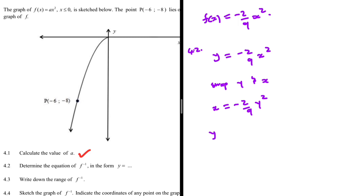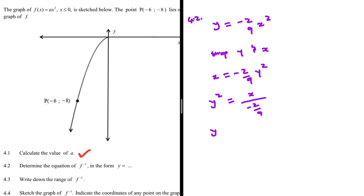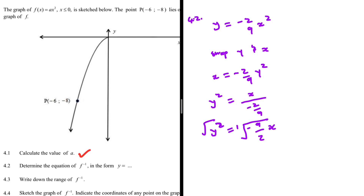We divide x by minus 2 over 9, giving y squared equals x divided by minus 2 over 9. We can rewrite that as y squared equals minus 9 over 2 multiplied by x. To make y the subject and not y squared, we take the square root of both sides — and we need plus or minus when introducing a square root.